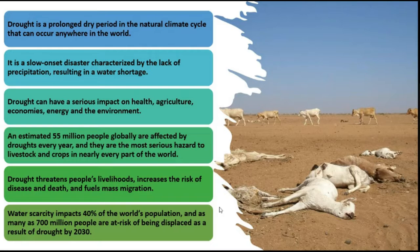Drought is basically a prolonged dry period in the natural climate cycle that can occur anywhere in the world. There are many drought-prone areas worldwide which we will discuss further. Drought is a slow onset disaster characterized by lack of precipitation resulting in water shortage, and can have serious impacts on health, agriculture, economies, energy, and the environment.